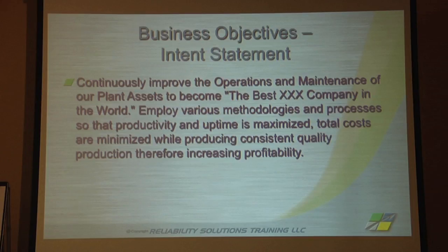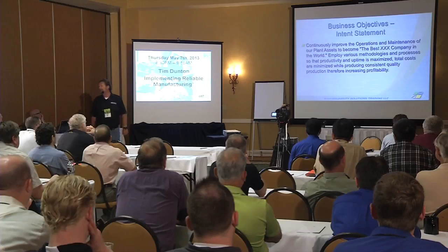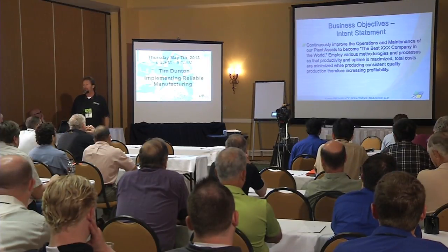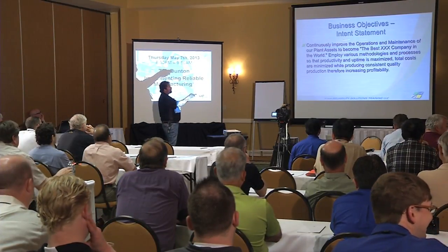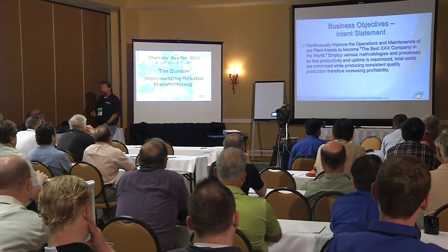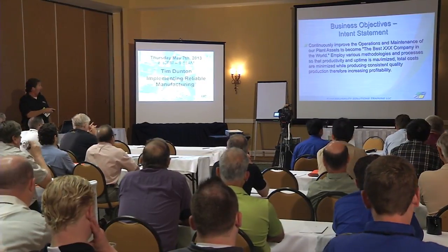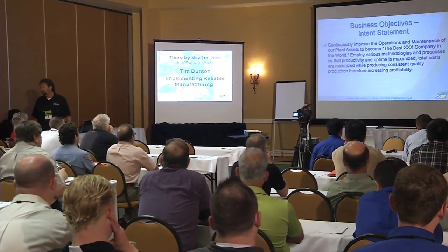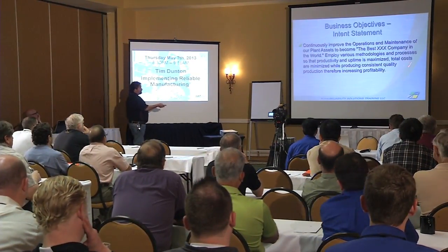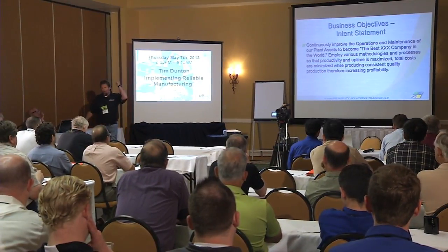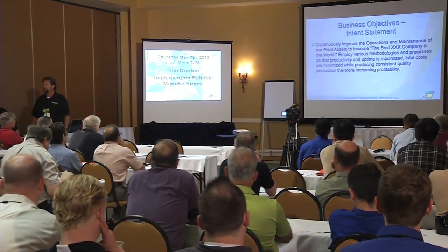Here's an example: 'Continuously improve the operations and maintenance of our plant assets to become the best XX company in the world. Employ various methodologies and processes so that productivity and uptime is maximized, costs are minimized while producing consistent quality production and therefore increasing profitability.' Kind of long and wordy, but look at what it tells us. It says we want continuous improvement in operations AND maintenance — this isn't just a maintenance function, it's both. You're going to use methodologies and be systematic. We're looking at improving productivity and uptime, minimizing costs, and consistent quality. If I come to work one morning and I'm not working on one of those four or five items, what am I working on? The wrong things.